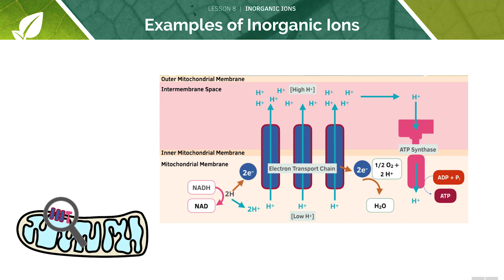Additionally, H+ ions are important in ATP synthesis in the mitochondria during cellular respiration. There is a low concentration of hydrogen ions in the mitochondrial matrix and a high concentration in the mitochondrial membrane, leading to a proton gradient which is used to generate energy. We'll learn more about this mechanism in later tutorials.